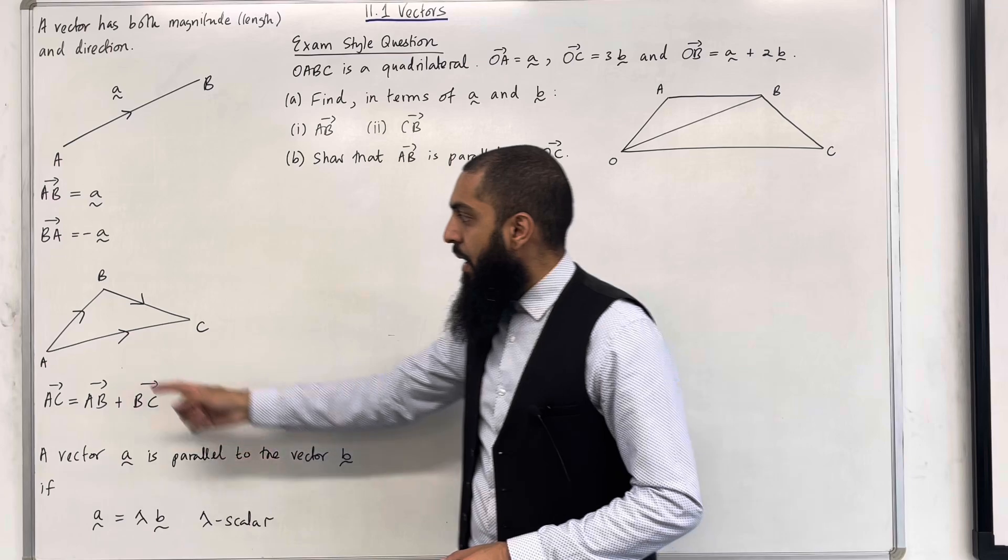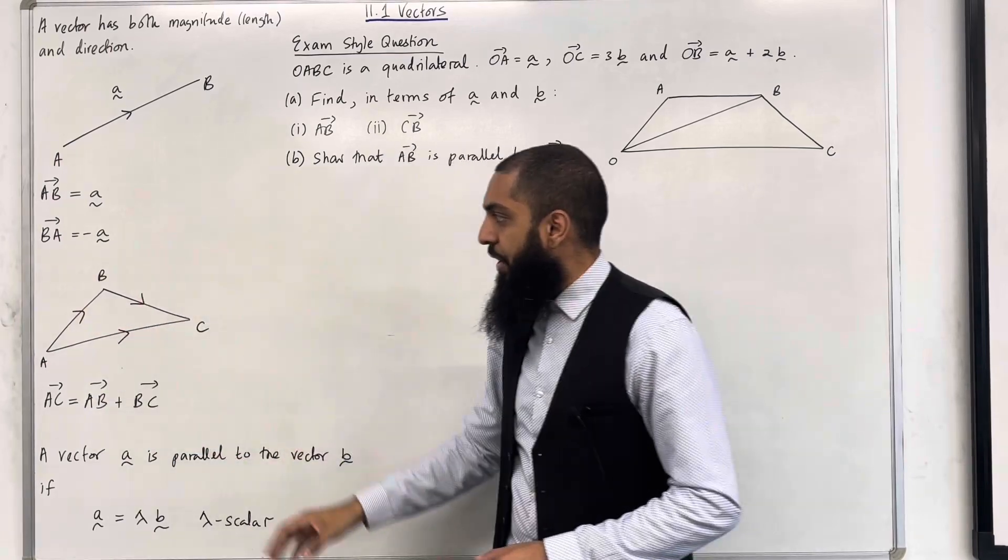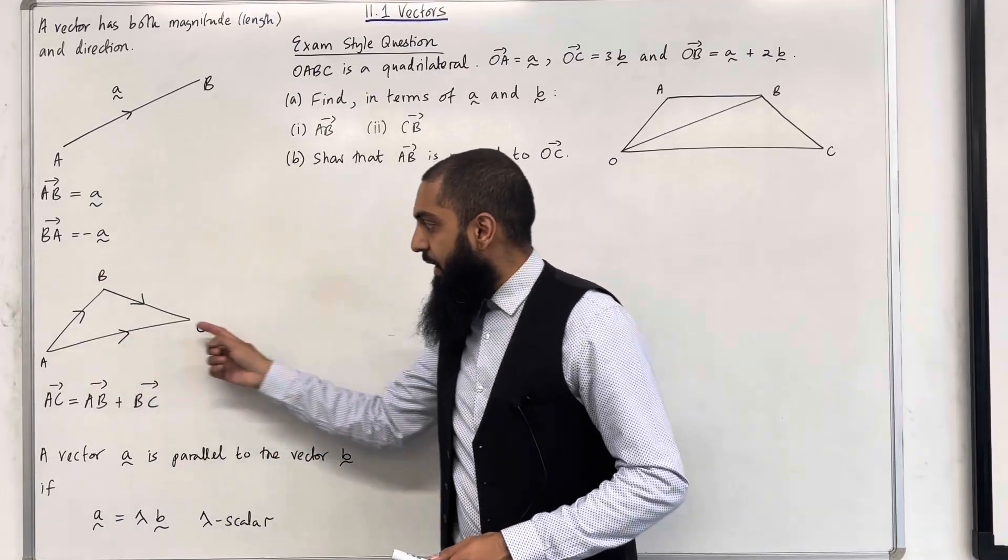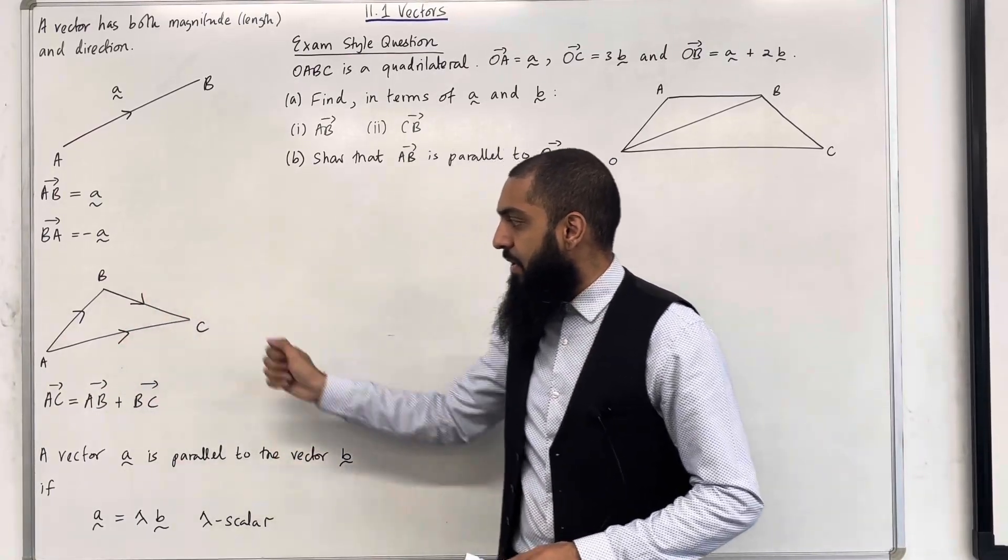Here is a triangle. The vertices are labelled as A, B, C, and you've got the directions labelled. The vector A to C is given by the vector A to B plus the vector B to C.